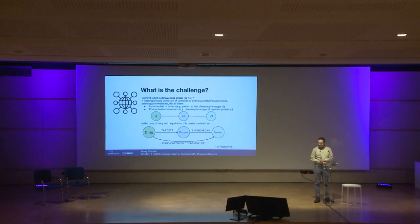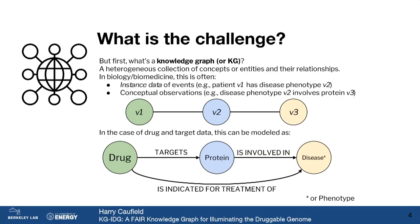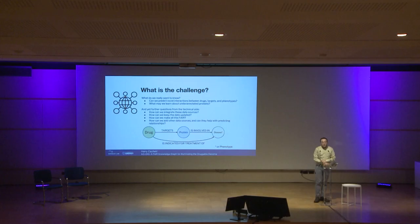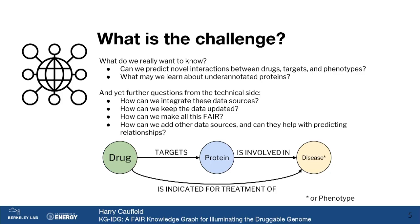In the case of drugs and their protein targets, we can model it at a high level: you have drugs that have targets, you have proteins that are involved in a disease or phenotype, and you also know things like this drug is already indicated for the treatment of this disease, or perhaps it's contraindicated. What we really want to know is: can we predict novel interactions between those drugs, targets, and phenotypes when applying this knowledge graph, and what do we actually learn about under-annotated proteins?